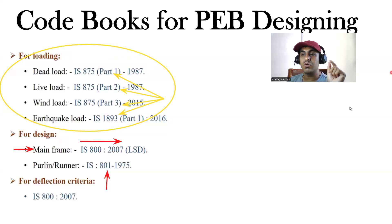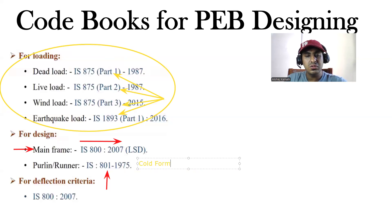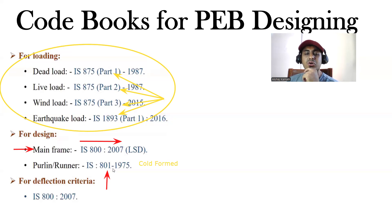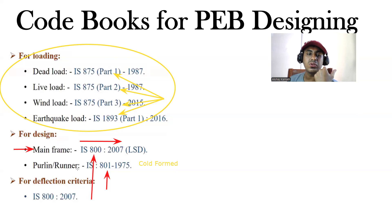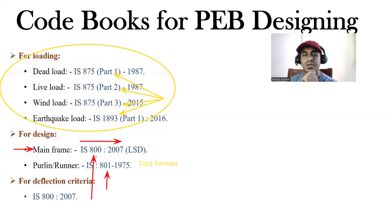So remember two things: for normal frame design use IS 800:2007 (Limit State Design), and for cold-formed sections like purlins use IS 801. For checking deflection criteria, we use the same IS 800:2007 code book. The deflection criteria for cranes — span by 500 and span by 180 — are mentioned in IS 800.